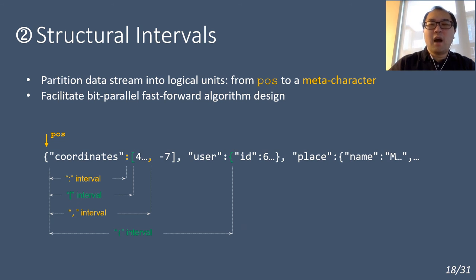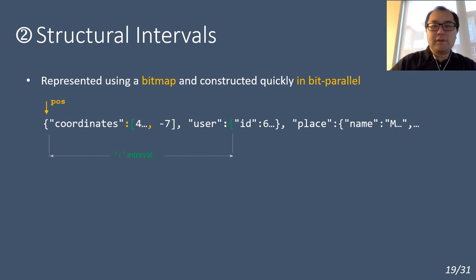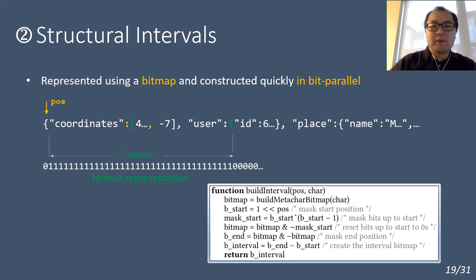The second major component is a concept called structural intervals. A structural interval is a sequence of characters from the current streaming position to the next meta-character of interest. The slide here shows some example structural intervals, like the colon interval, open-bracket interval, and so on. The reason we introduce this concept is to simplify the design of bit-parallel algorithms. A key feature of the structural interval is that it can be represented using a bitmap, and the bitmap can be constructed quickly with bitwise parallelism.